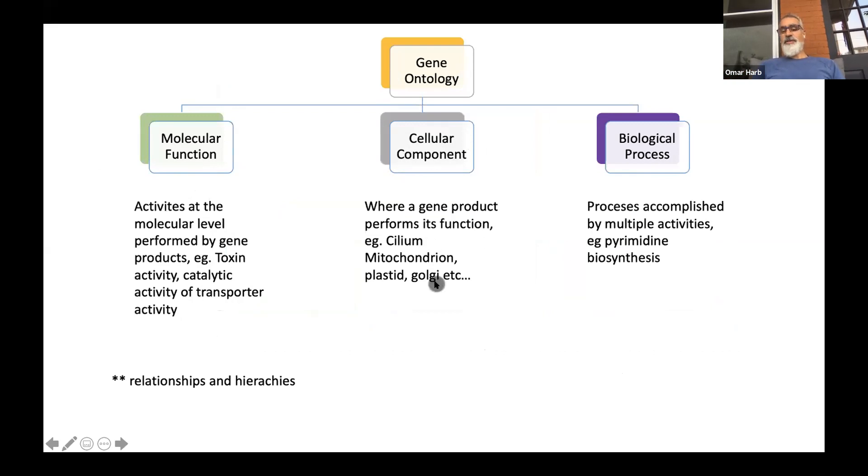The cellular component talks about where the function of a gene is taking place. For example, if the gene is functioning in the apicoplast, it might get a plastid gene ontology associated with it. Or if it's in a mitochondria, it'll get a mitochondrial gene ontology term associated with it. Those could be subcategorized—you could have mitochondrial membrane compartment or other subcategorizations.